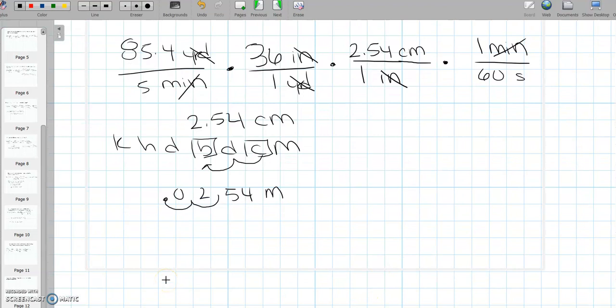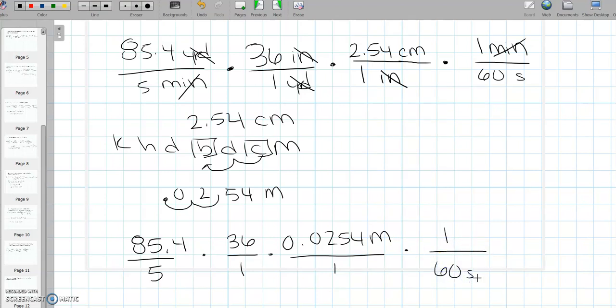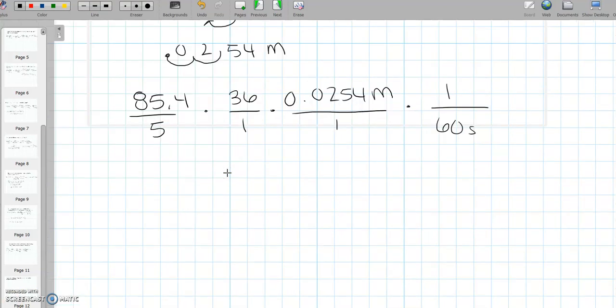So let's write this all out again. I'm just going to move down the screen so that we have a little bit more room. There we go. All right, so we got 85.4 all over 5, times 36 over 1, times 0.0254 meters over 1, times 1 over 60 seconds. So that gives us an answer of 0.26029 meters per second. So let's just call it 0.26 meters per second. Let's go on to the next one.